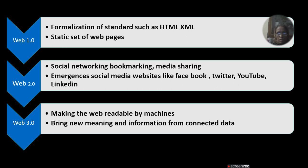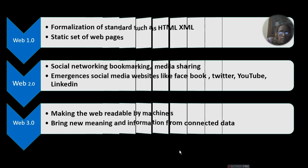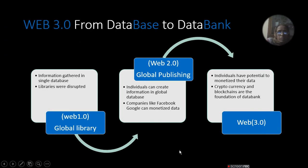After this, Web 3 came, enabling direct access to domain data. We can connect data from database to data bank. In Web 1, there was a global library where information was gathered in a single database — libraries were disrupted and a single database worked on the worldwide web.